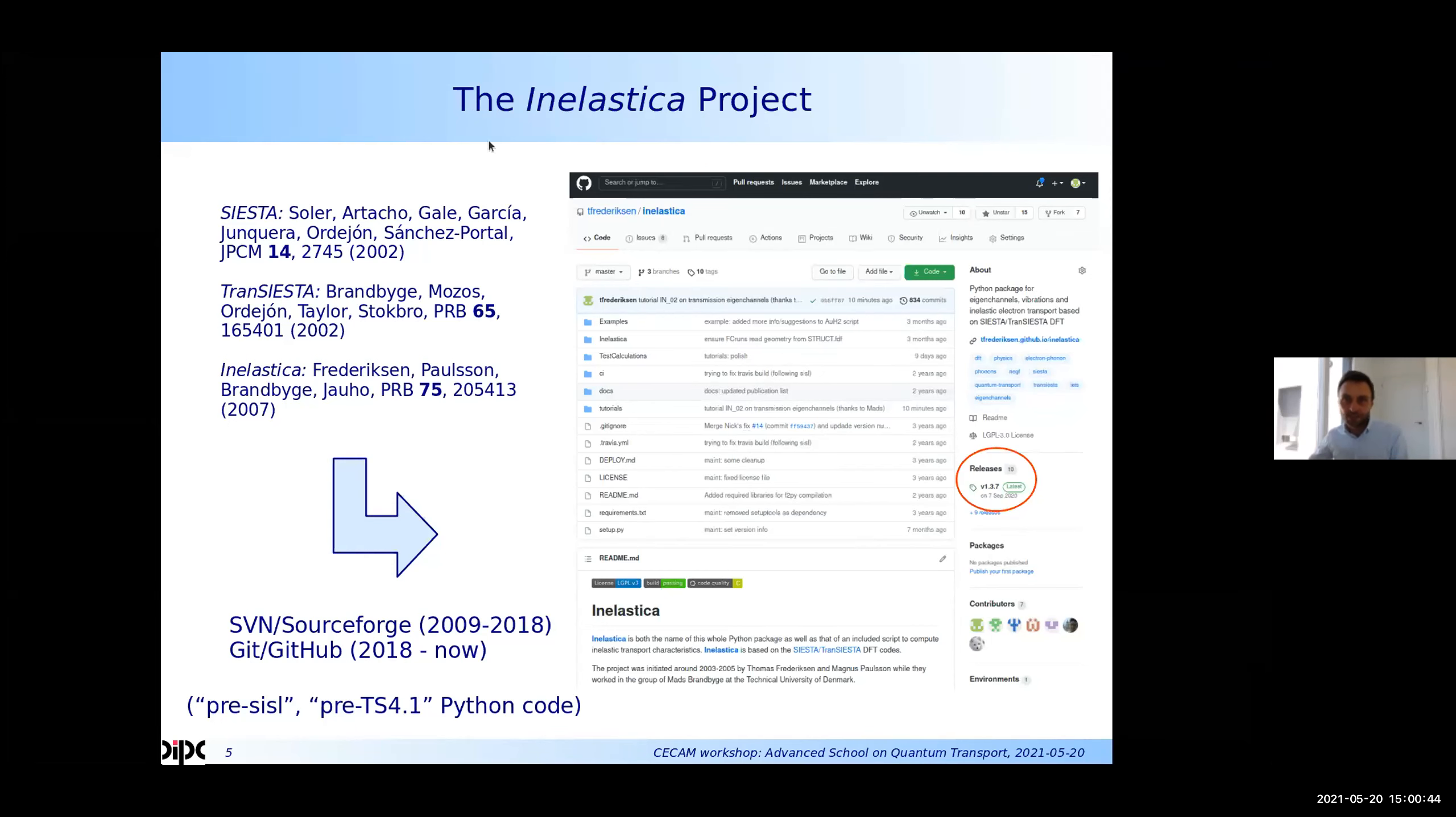So the Inelastica project is a Python code that we have now in GitHub. And it's basically a little bit of a vintage code, I would say. It was developed before SISL that we are using these days and before the many developments in the TranSiesta code with the 4.1 series. So some of the tools we have here is a little bit of a duplicate things that can now be done much more elegantly with SISL, but it's somehow a pending effort to try to upgrade these tools to a modern strategy.